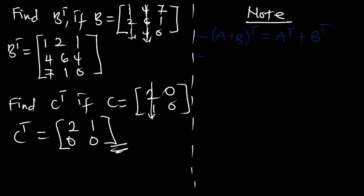The second identity: the transpose of a transposed matrix is equal to the original matrix — so (A transpose) transpose equals A. The third identity: if you multiply a scalar factor k by a matrix and transpose it, it is going to be the same as multiplying k by the transpose of the matrix — that is, (kA) transpose equals k times A transpose.